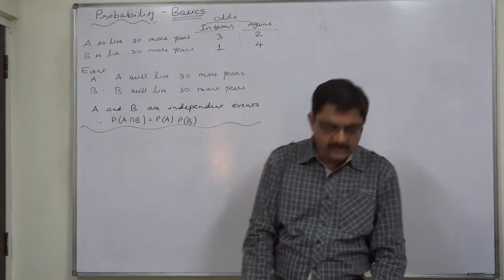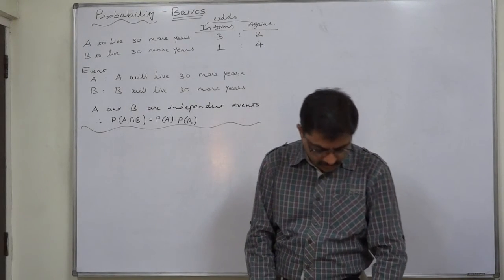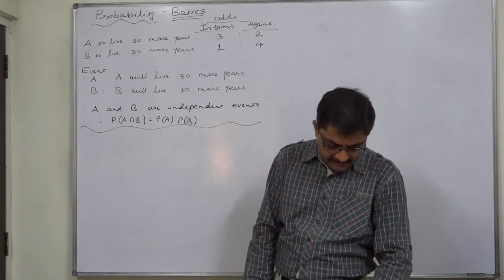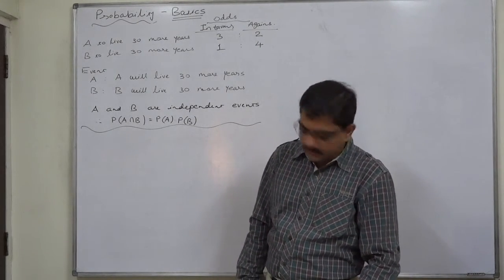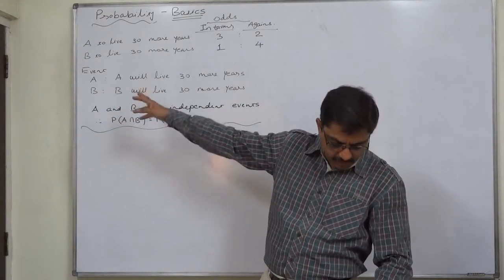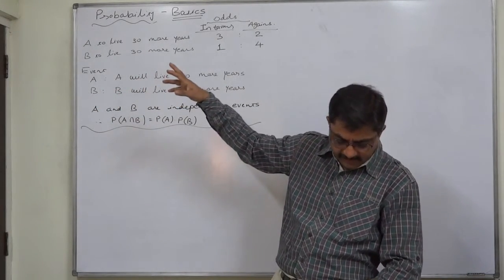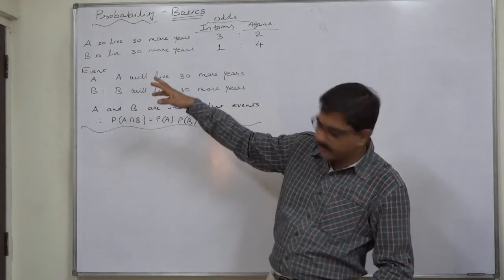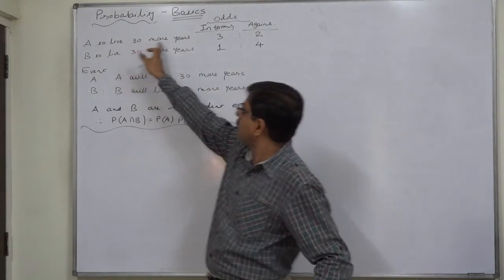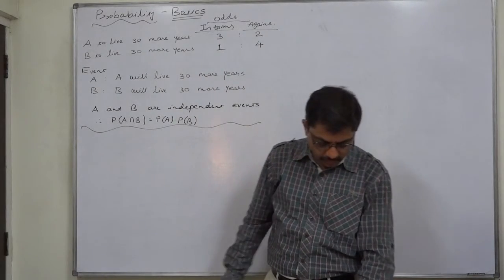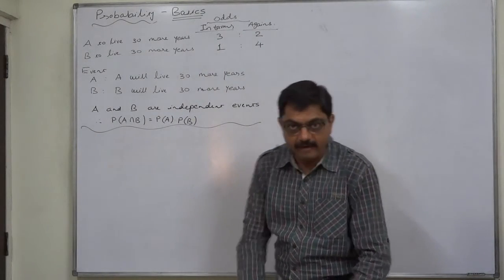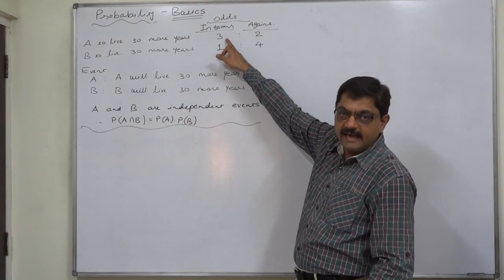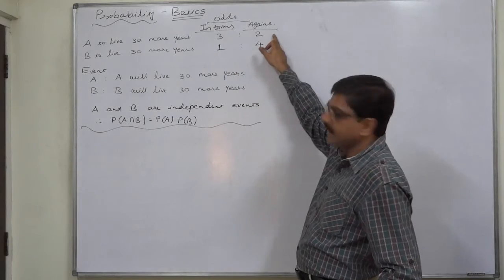The present age of A is 35 years. The odds in favor of his living up to the age of 65 are 3 to 2. So we can conclude that the odds in favor of A living 30 more years are 3 to 2. In odds in favor, the first number of the ratio stands for in favor and the second stands for against.